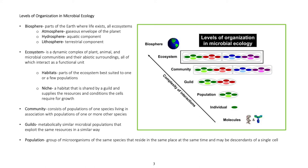Habitats: Parts of the ecosystem best suited to one or a few populations. Niche: A habitat that is shared by a guild, and supplies the resources and conditions the cells require for growth.